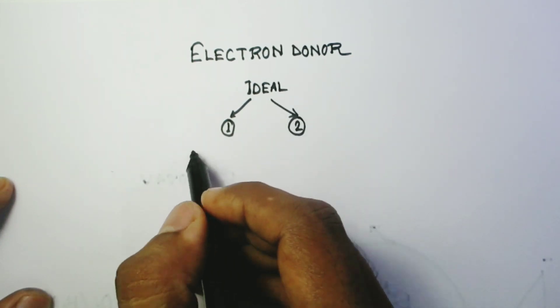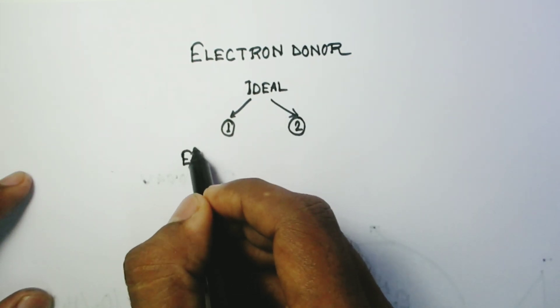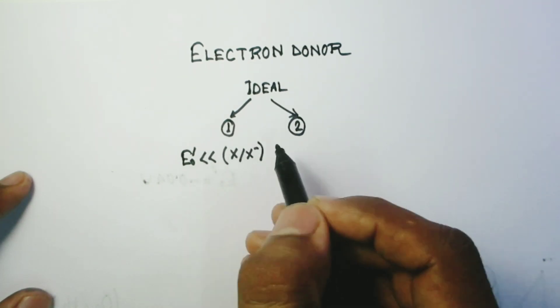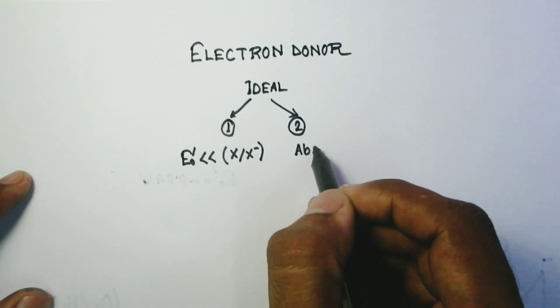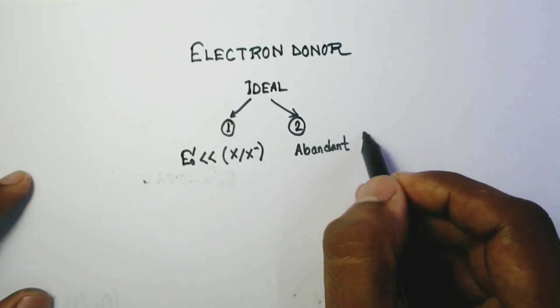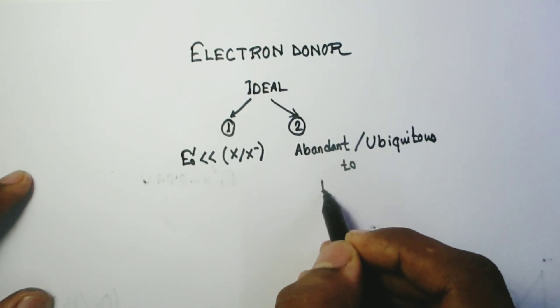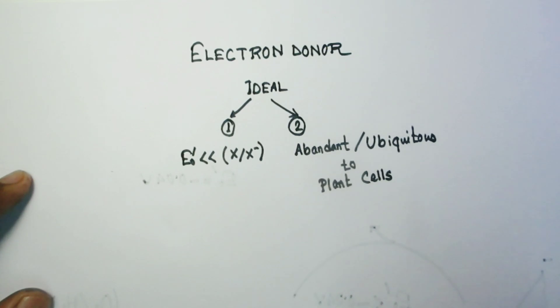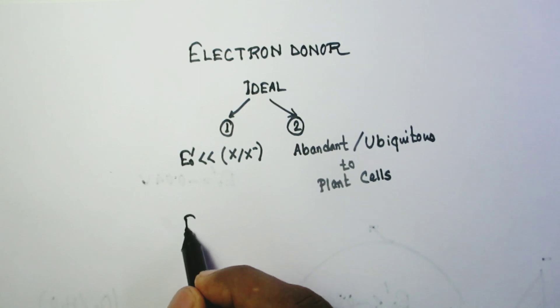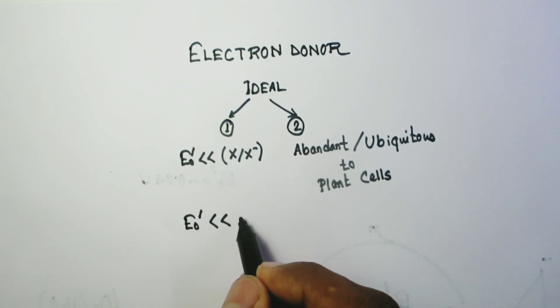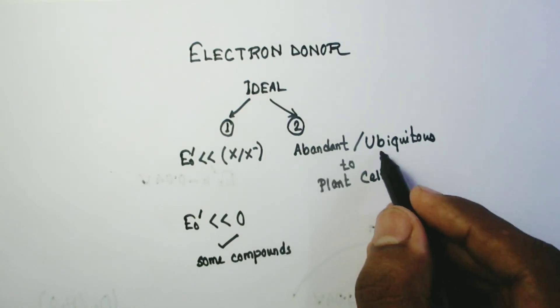What should be the character of an ideal electron donor? There are two criteria. Number one, the E0 prime value must be even more negative than X, X minus redox system. Number two, it must be abundant or ubiquitous to plant cells in order to use them. E0 prime value is negative in case of some compounds. Plant can use them, but the problem is they are not ubiquitous to them. So, in case of any material meeting both the criteria, there are none.